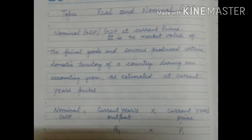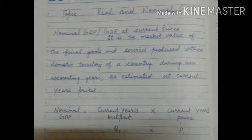Firstly, we have the meaning of nominal GDP, or we can say GDP at current prices. Nominal GDP's second name is GDP at current prices. It is the market value of final goods and services produced within the domestic territory of a country during an accounting year,